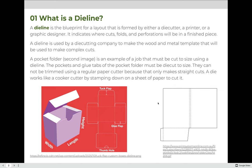A pocket folder is an example of a job that must be cut to size using a die line. The pockets and glue tabs of the pocket folder must be die cut to size. They cannot be trimmed using a regular paper cutter — called a guillotine cutter — because those only make straight cuts. A die works like a cookie cutter by stamping down on a sheet of paper to cut it to the unique size and shape needed.